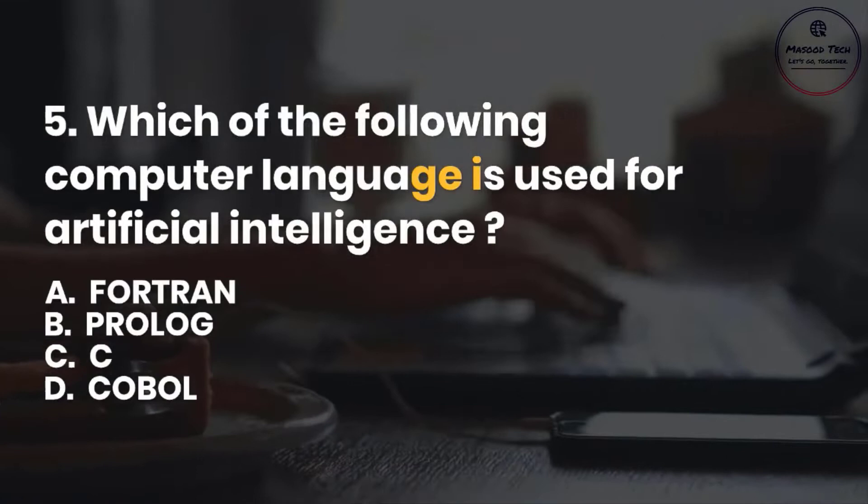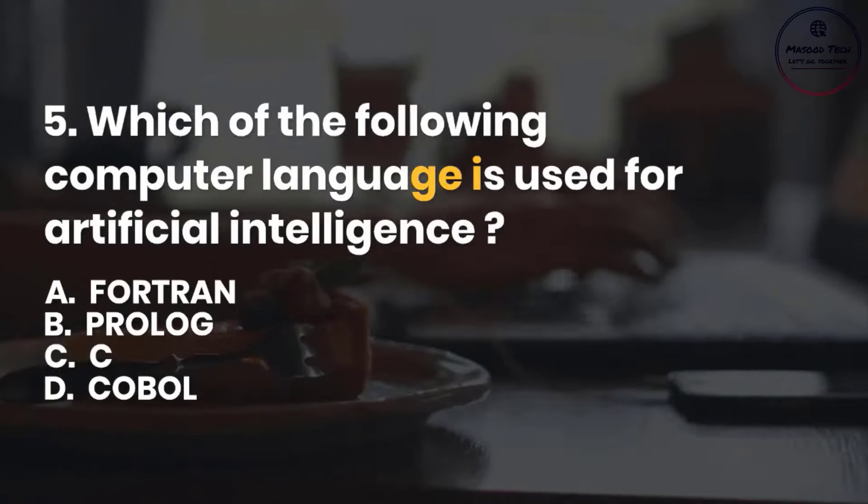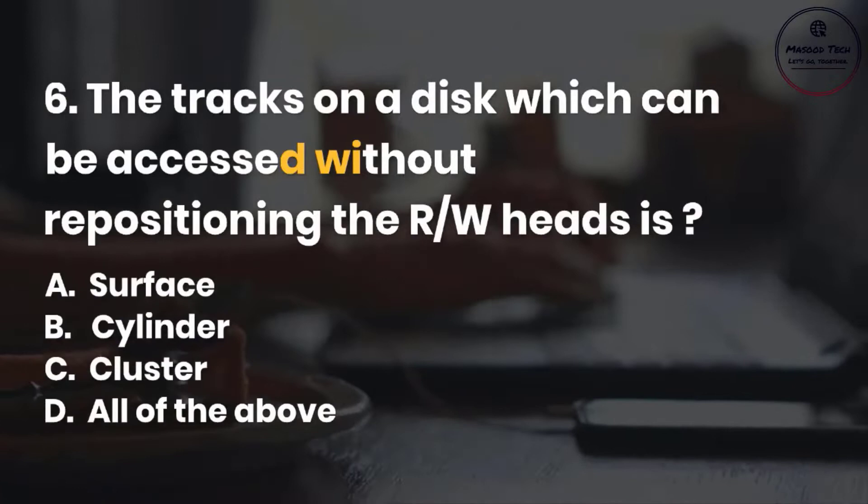Number 6. The tracks on a disk which can be accessed without repositioning the R/W head is: A. Surface. B. Cylinder. C. Cluster. D. All of the above. Correct answer is B.